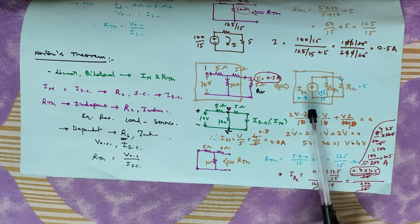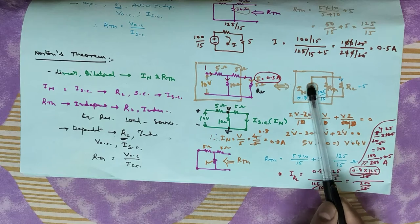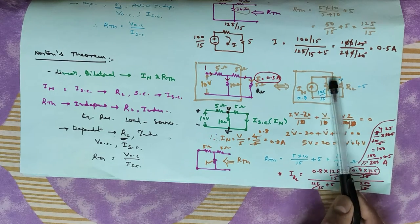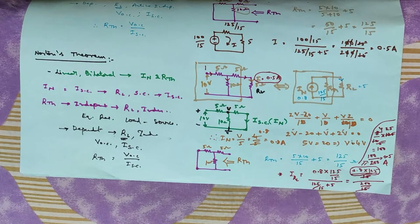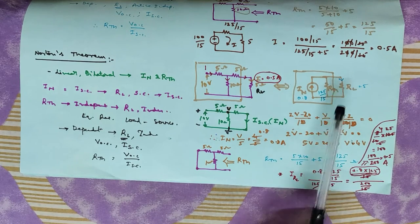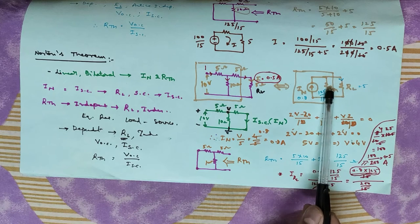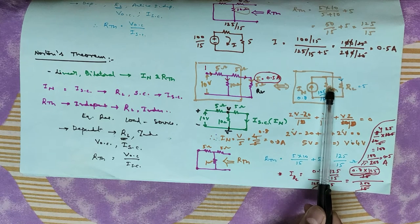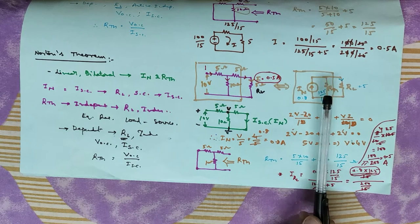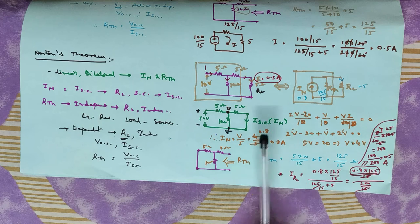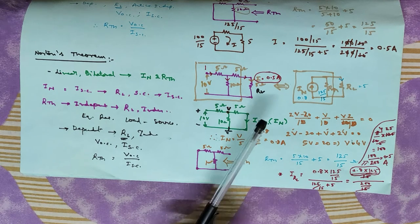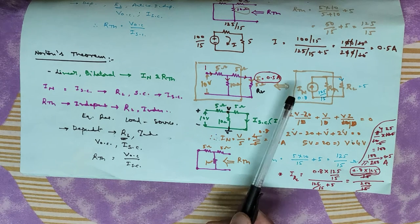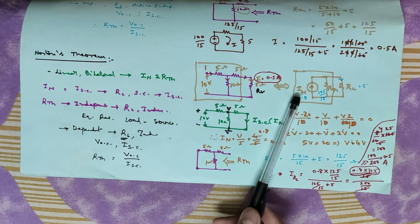We need to find the Norton current ISC and RTH. The Norton equivalent resistance and the Thevenin equivalent resistance RTH are the same. So, what we need to change is the current.